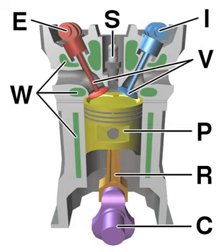A second class of internal combustion engines use continuous combustion: gas turbines, jet engines and most rocket engines, each of which are internal combustion engines on the same principle as previously described.